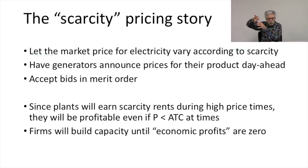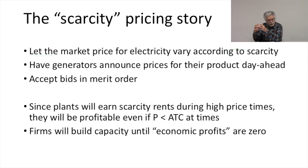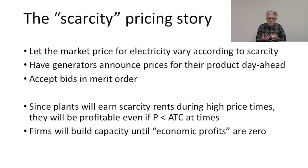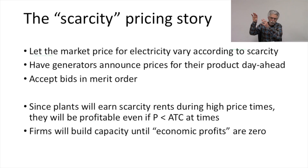A rising demand causes the price to rise because it needs to rise to justify the starting up of increasingly costly resources. To get the scarcity pricing story to work, we let the market price for electricity vary according to the level of demand. Scarcity is measured by the cost of resources required to bring online to satisfy that level of demand. We have generators announce the prices for their product in a day-ahead market auction, and then accept the bids that generators make in merit order according to marginal cost.